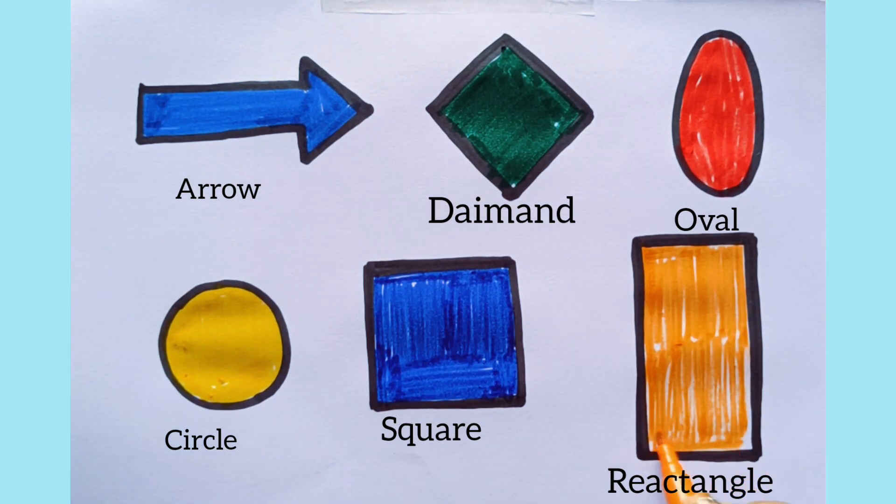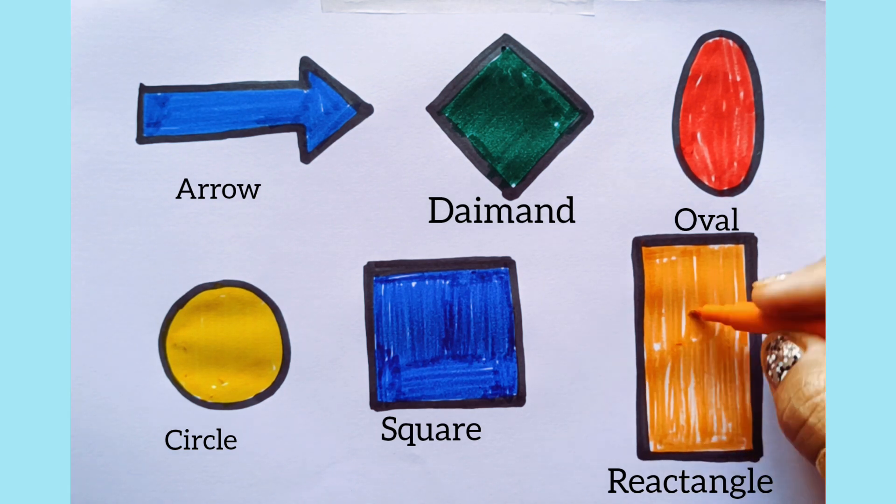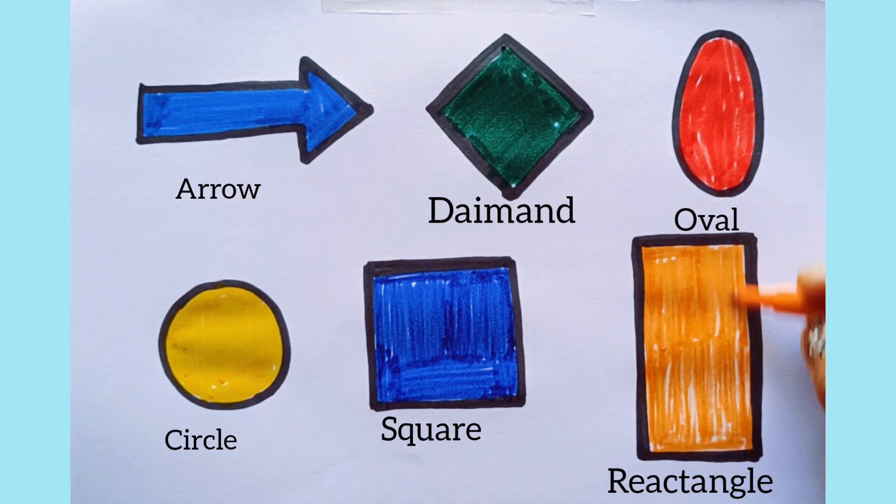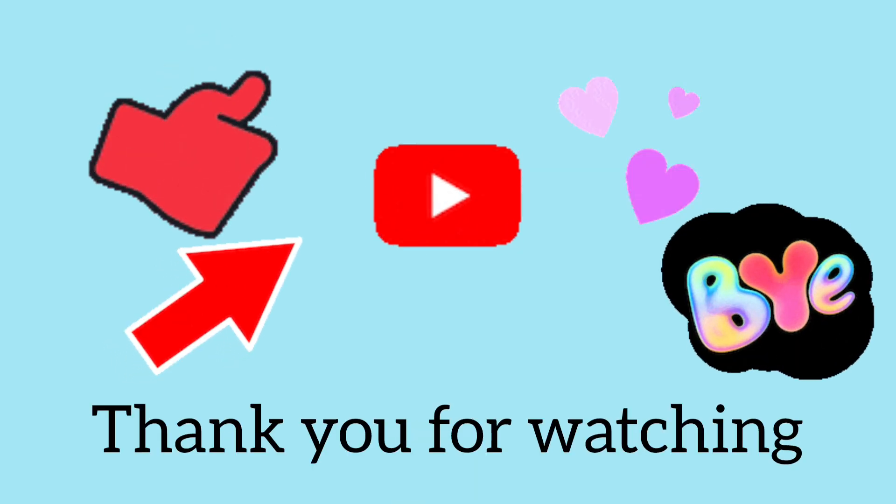So, we draw arrow, diamond, oval, circle, square and rectangle. Please subscribe to the channel and like the video. Thank you.